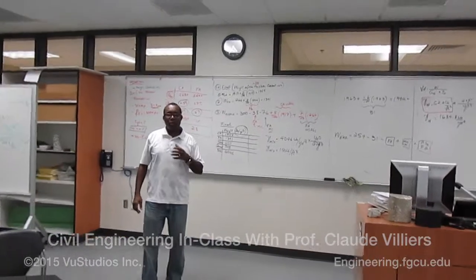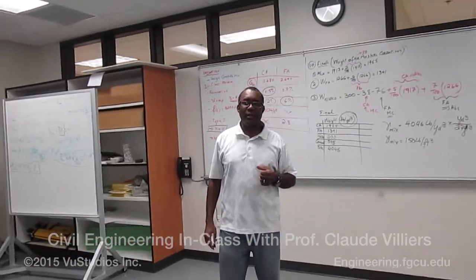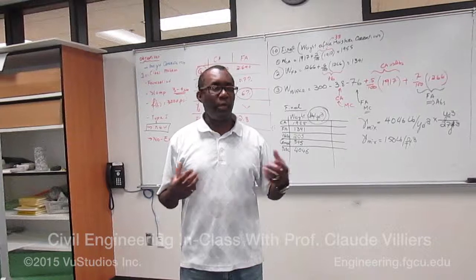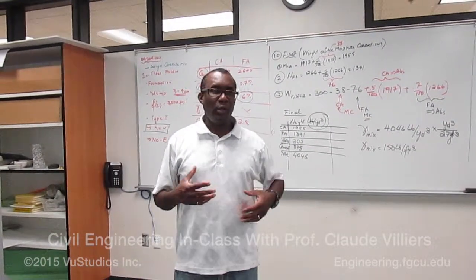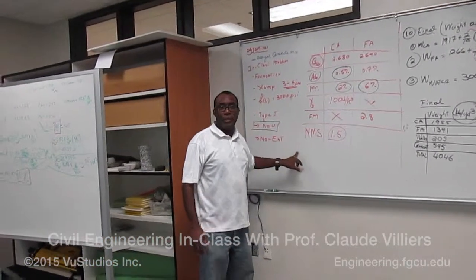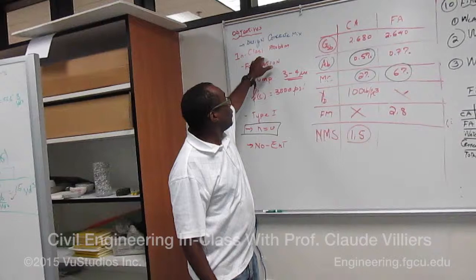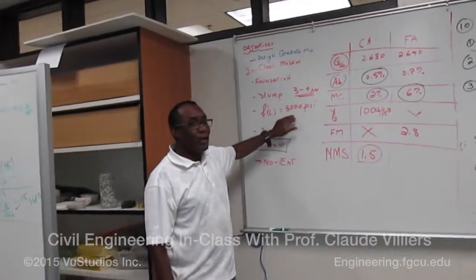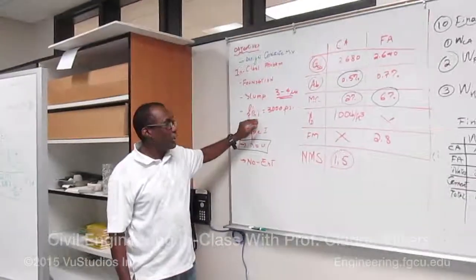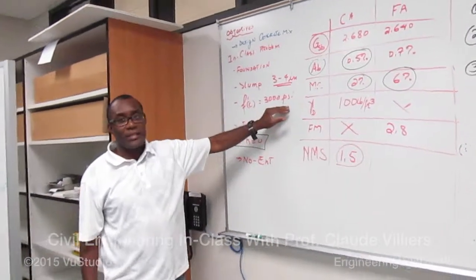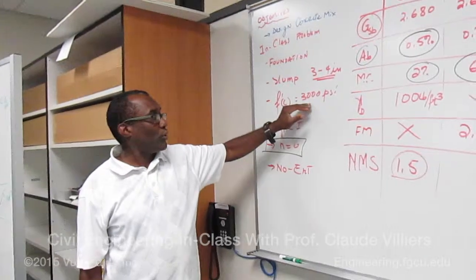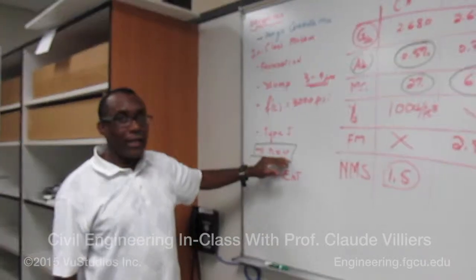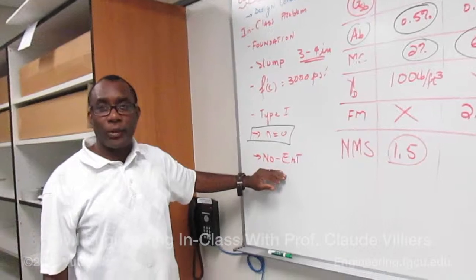My name is Dr. Claude Villiers. I'm an associate professor in the civil engineering program here. What you see today, I'm giving you a summary of what was going on in the class itself. We actually went through a full design of a concrete mix with the students. First the problem called for a foundation that has a slump of three to four inches that also has F'c. F'c is the compressive strength. That was 3,000 PSI. PSI is pounds per square inches. That was the target of the strength that they have to do. Then that's the type of cement they use. No data was available. They use no air entry.